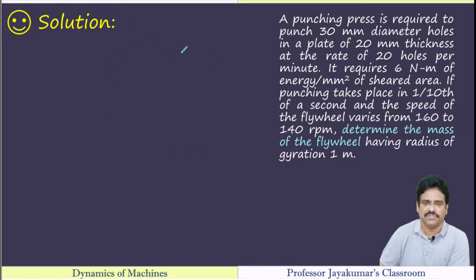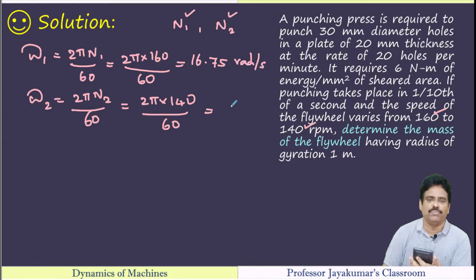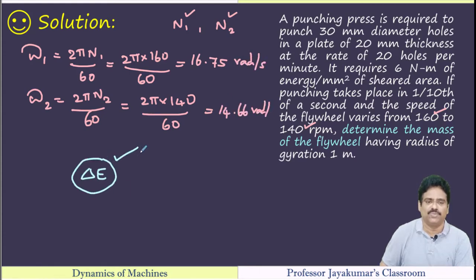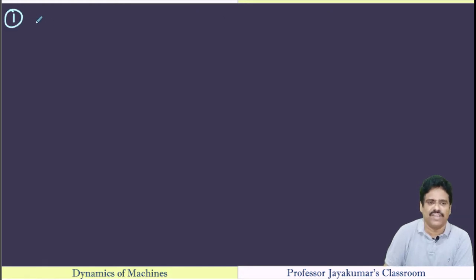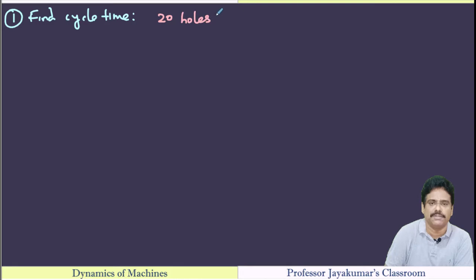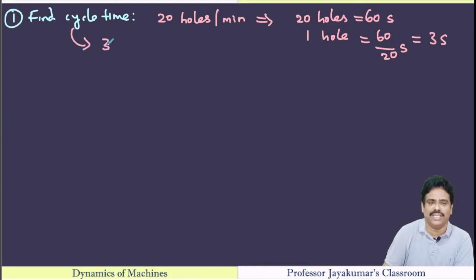Solution. Since they have given n1 and n2, I can find omega 1 and omega 2. In any flywheel problem, the most important thing is to determine maximum fluctuation of energy, delta E. We apply the steps listed in the theory. Step 1: find cycle time. Given 20 holes per minute, 20 holes require 60 seconds, so one hole requires 60/20 = 3 seconds. Therefore, cycle time = 3 seconds.